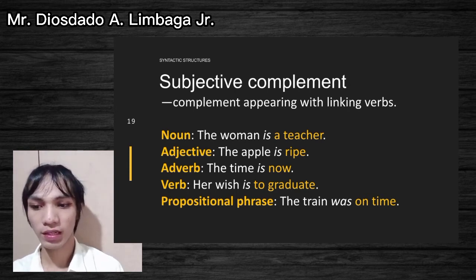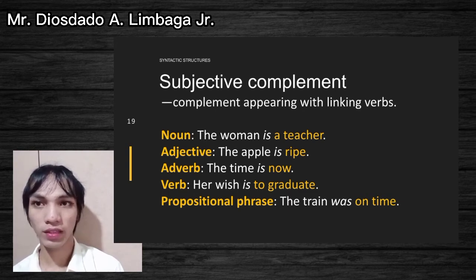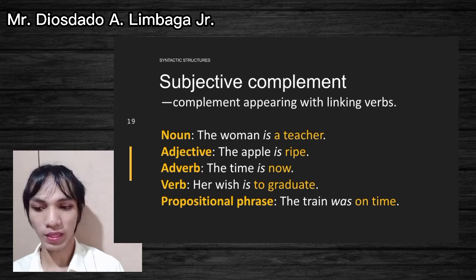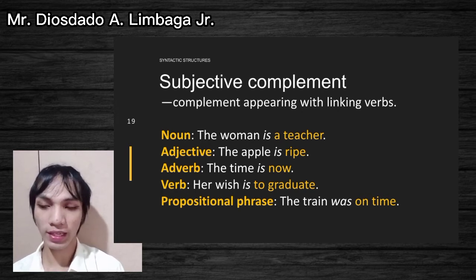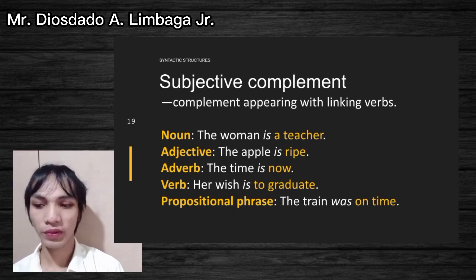For infinitive: 'His wish is to graduate' — 'to graduate' is the subjective complement. For prepositional phrase: 'The train was on time' — 'was' is the linking verb and 'on time' is the subjective complement.